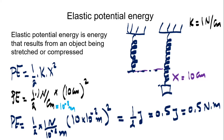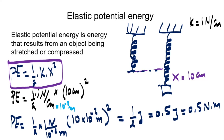So this is how we find elastic potential energy — we look at the stretch or compression and use the formula one half times the elastic constant times the square of the distance stretched, which is X. Now let's say we apply a force and compress this spring with the same amount, 10 centimeters.